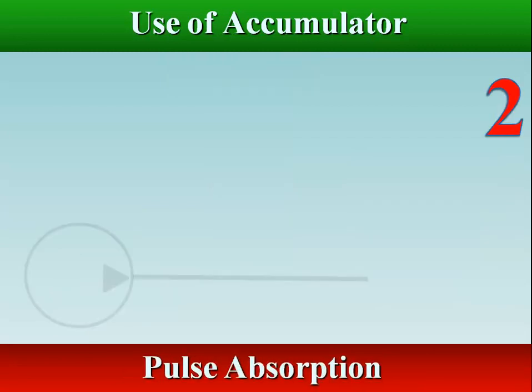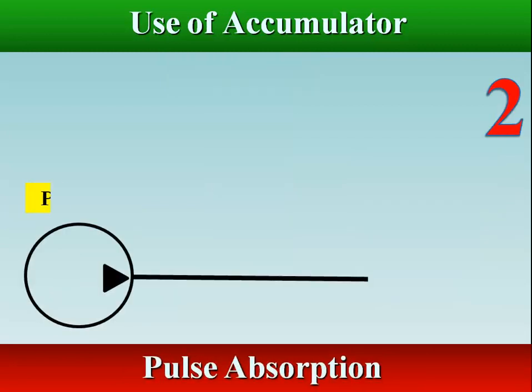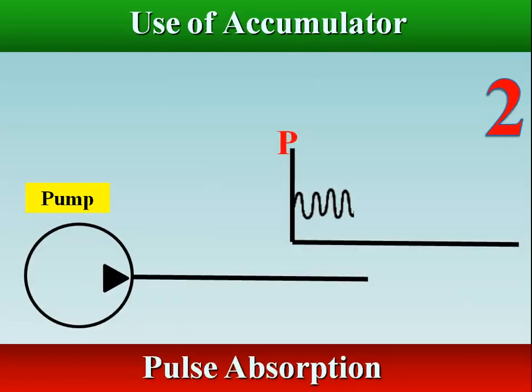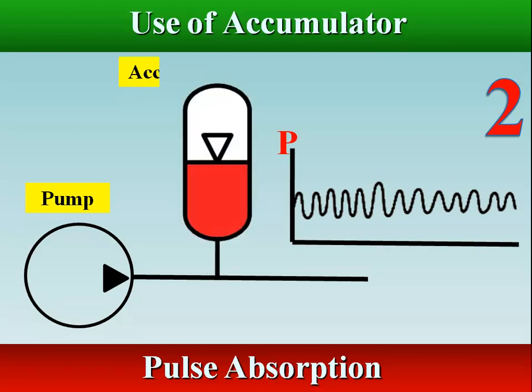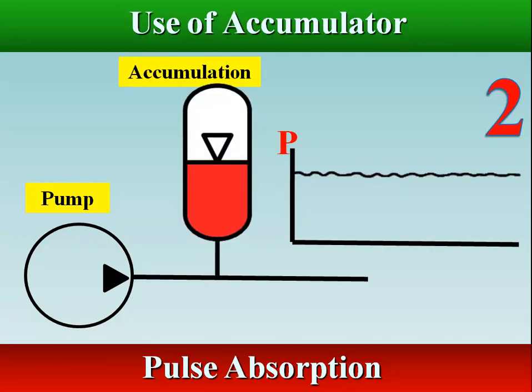All pressurized fluid discharged from pumps has a pulse. Pulses produce noise or vibrations that can cause instability or damage devices. The use of an accumulator can attenuate pulses.